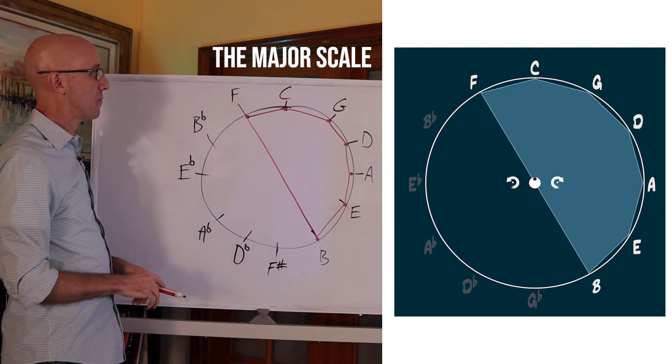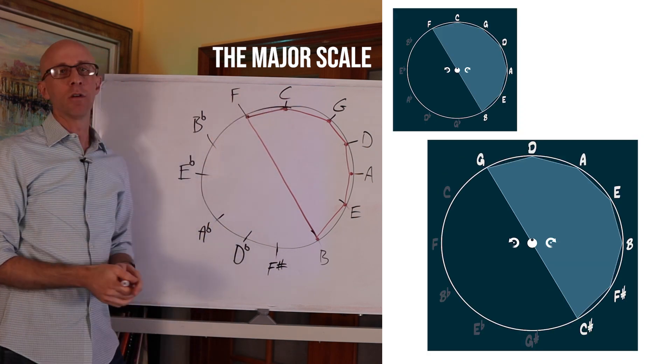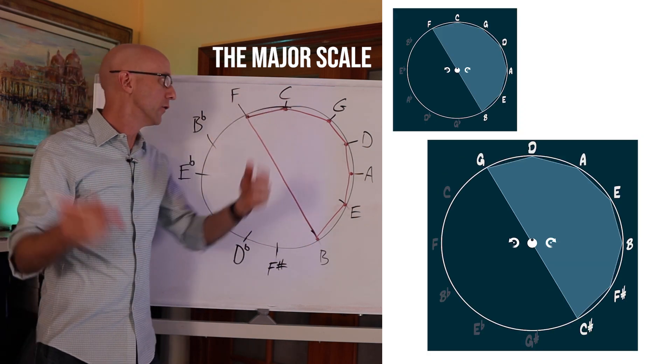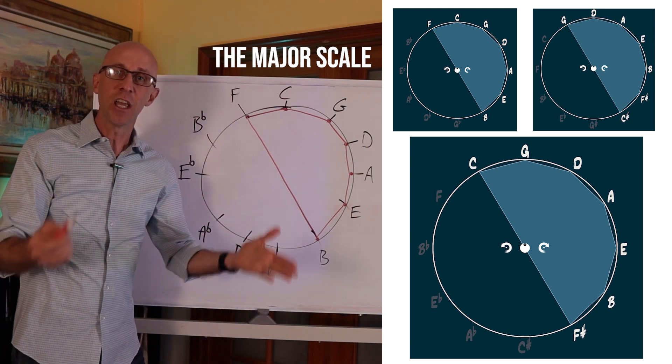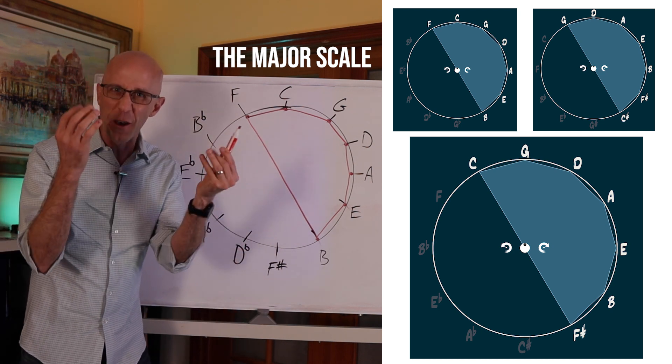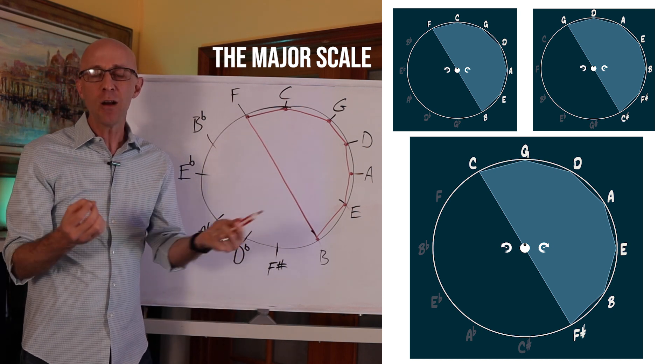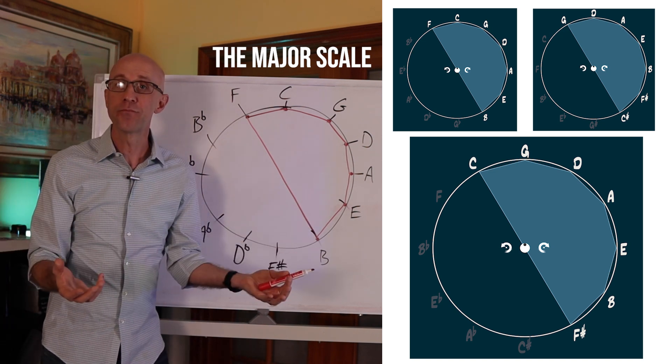I could have any note at 12 o'clock. I could have D at the 12 o'clock position, and now I have the D major scale, or G or F. But what you'll notice is that the shape does not change because a major scale is a major scale. There's only one major scale. So what we're looking at here is a scale formula.